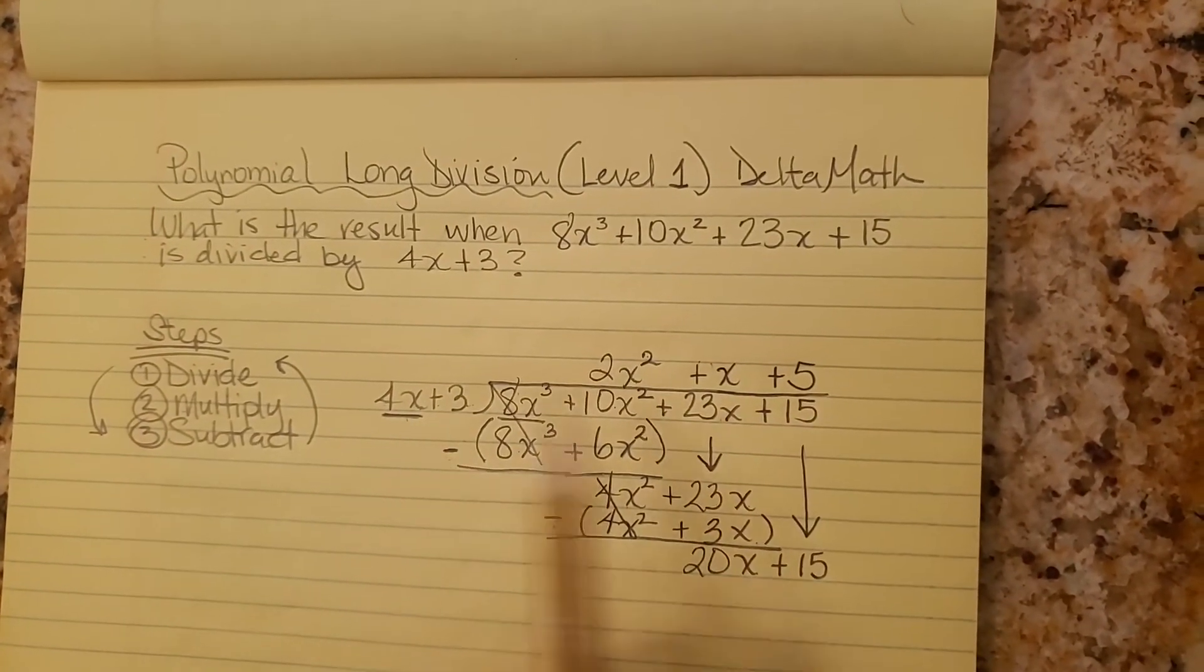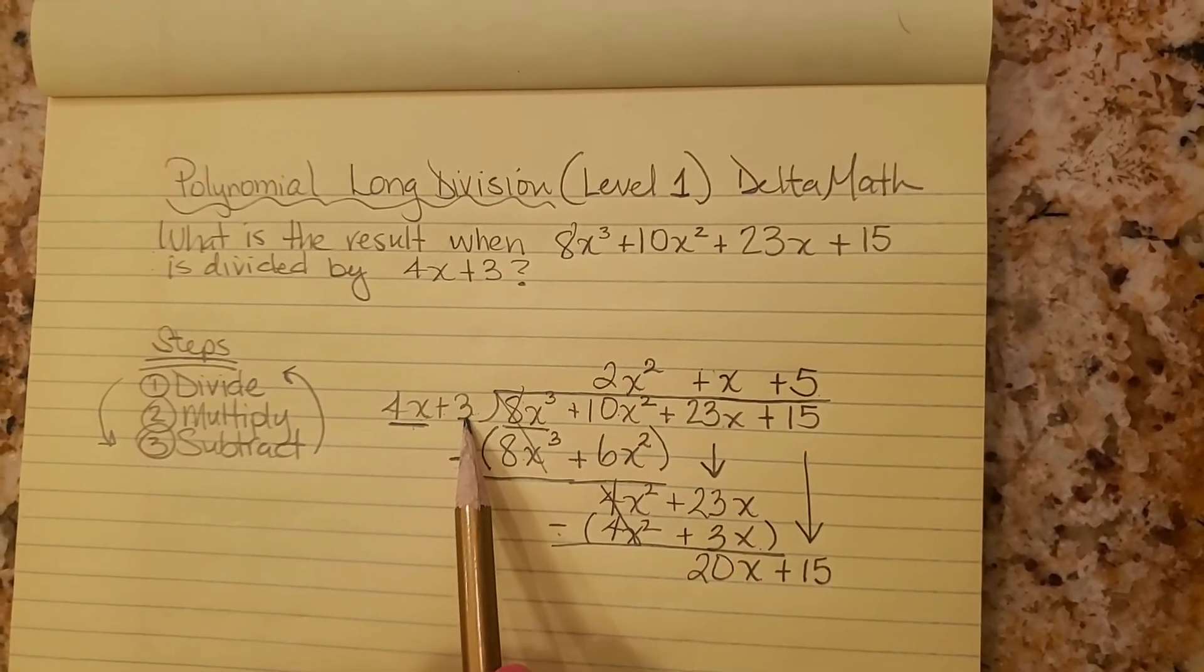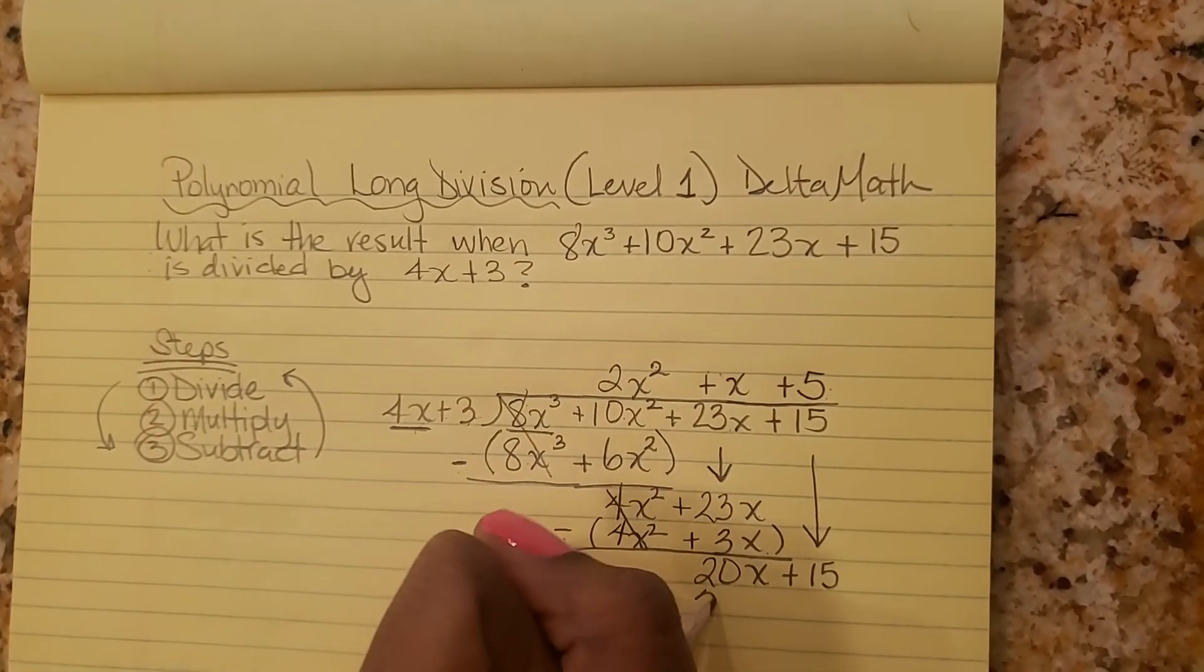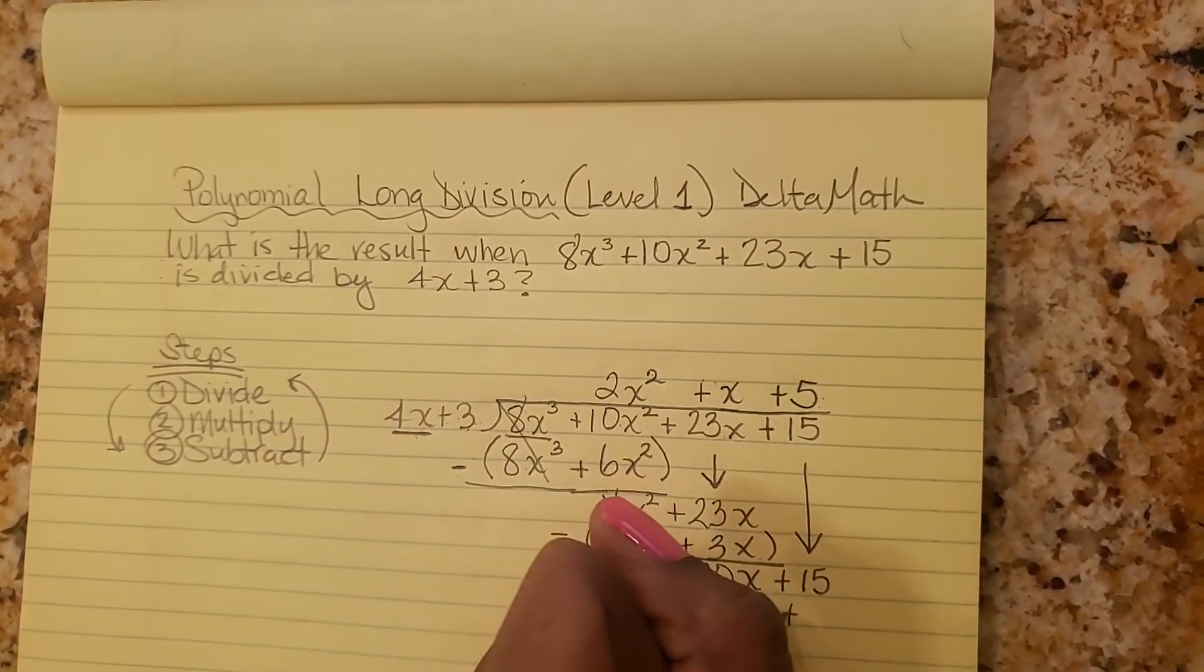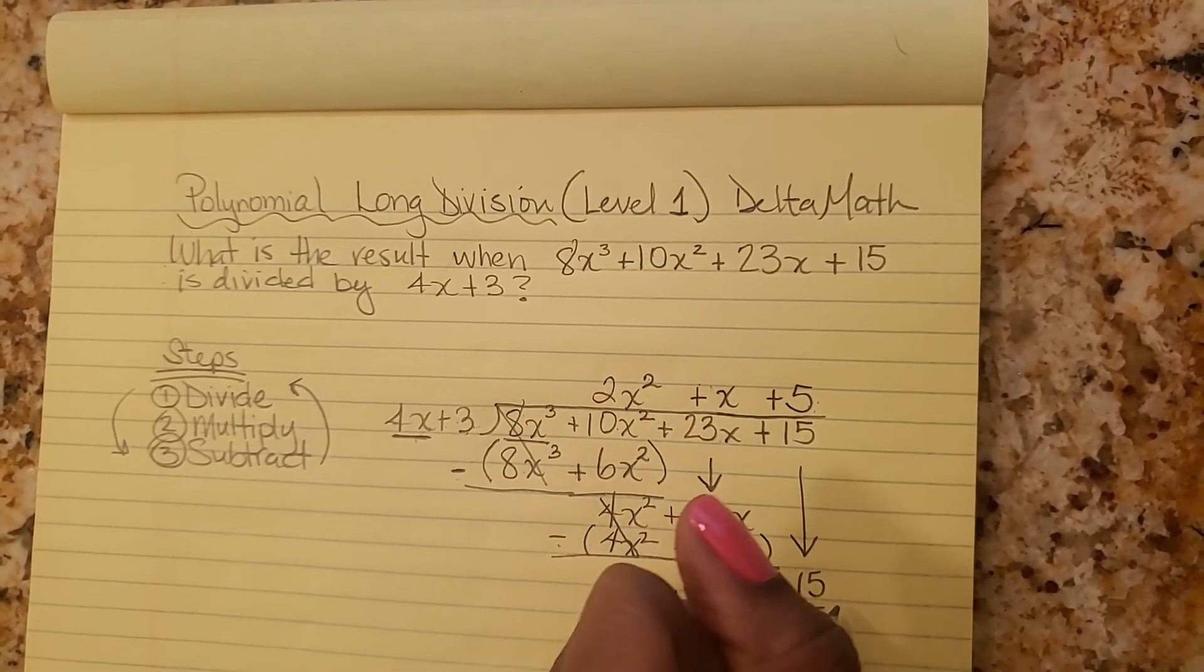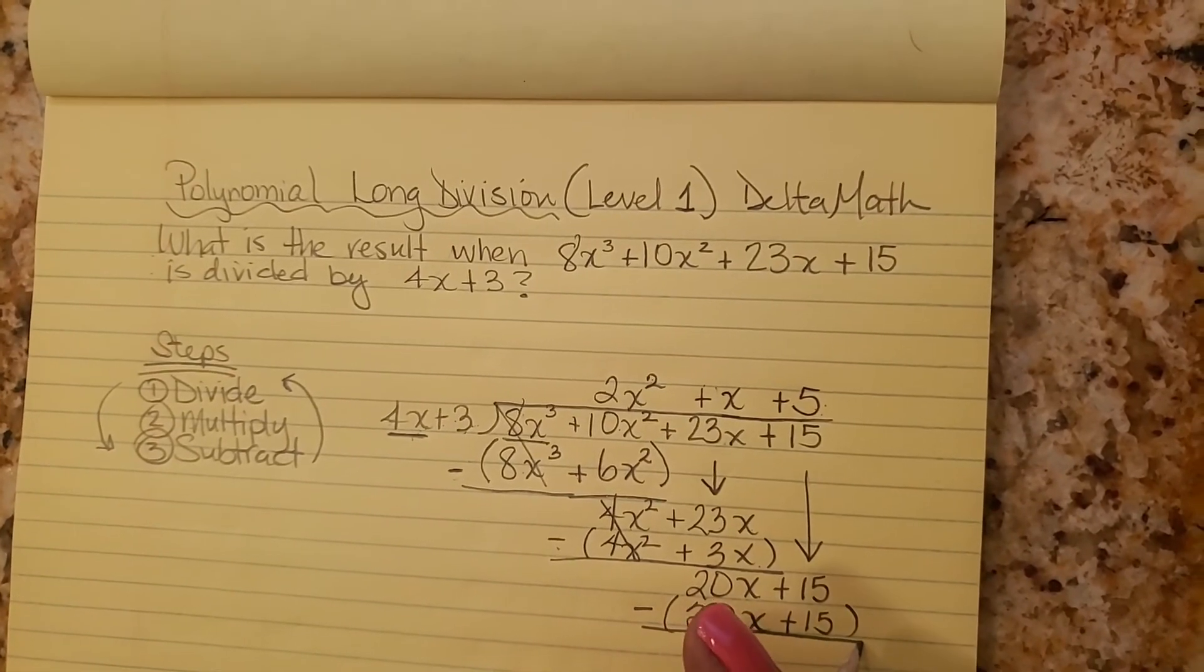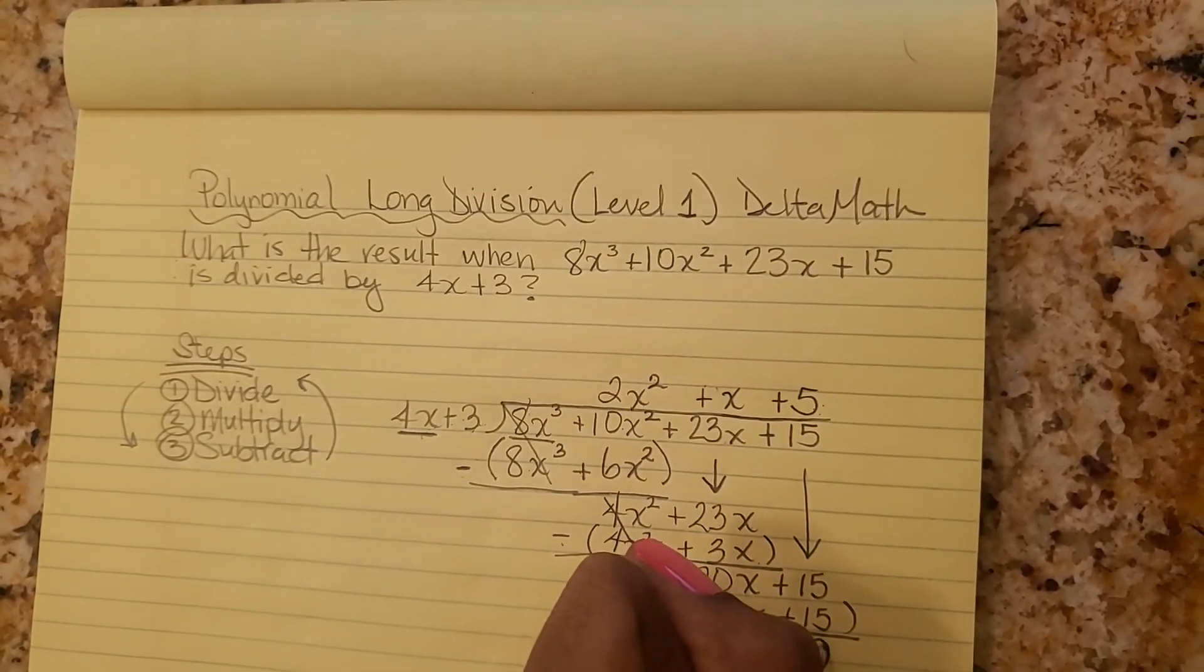And now we multiply. 5 times 4x plus 3. 5 times 4x is 20x. Ooh, look what's about to happen. Do you see what just happen? We got the same exact thing. So guess what that means. We have no remainder.